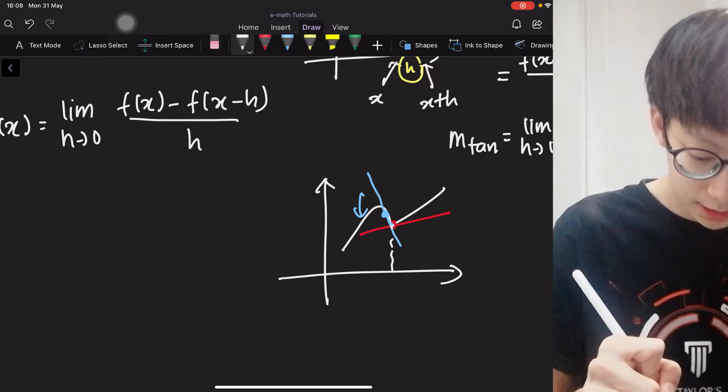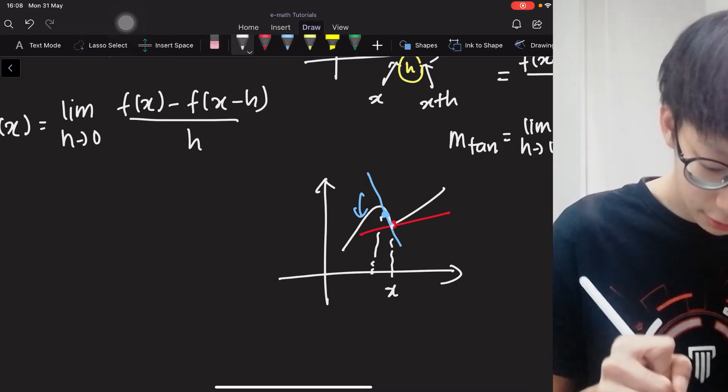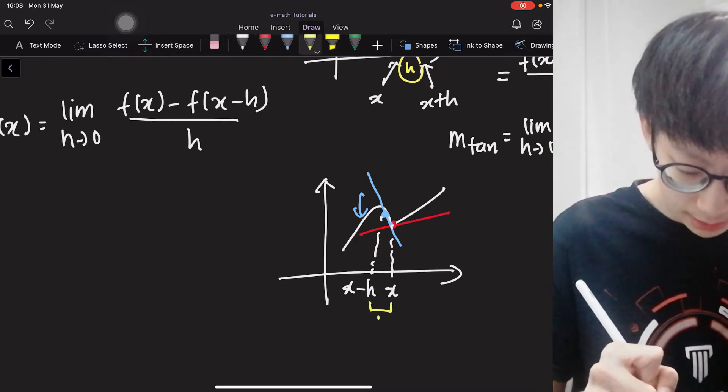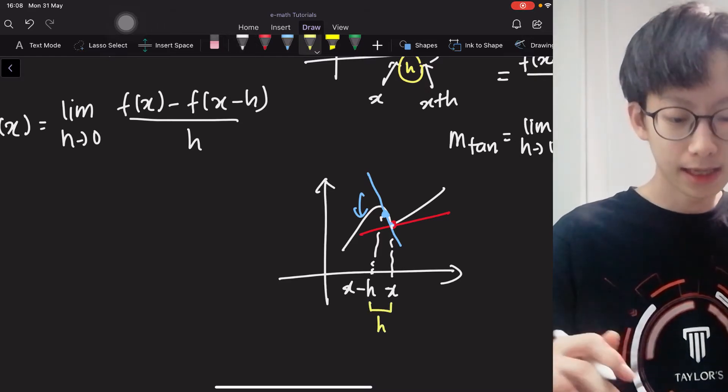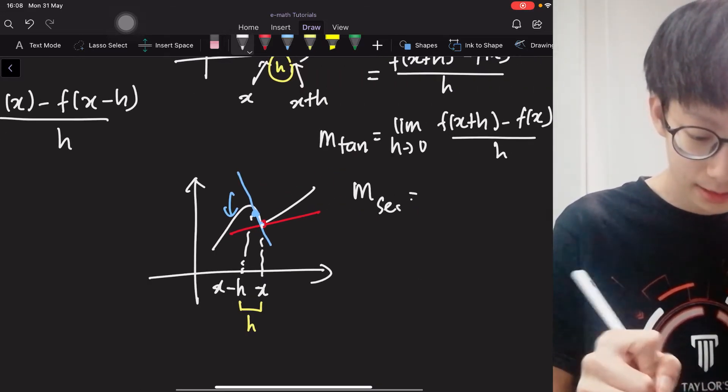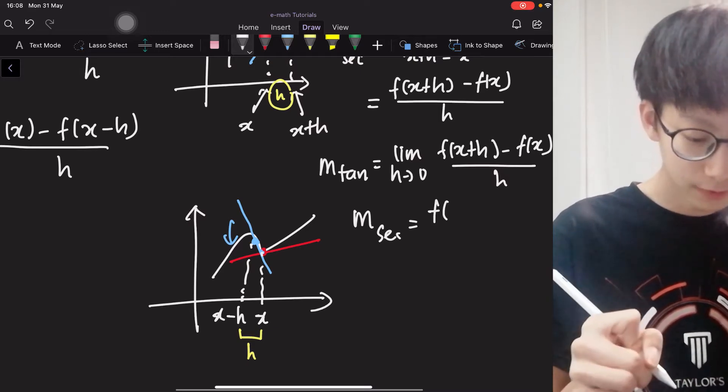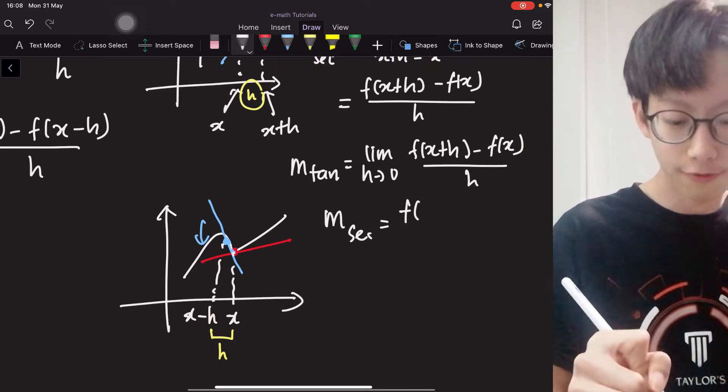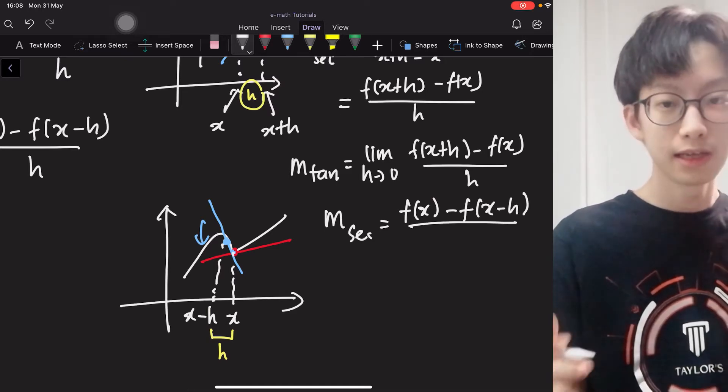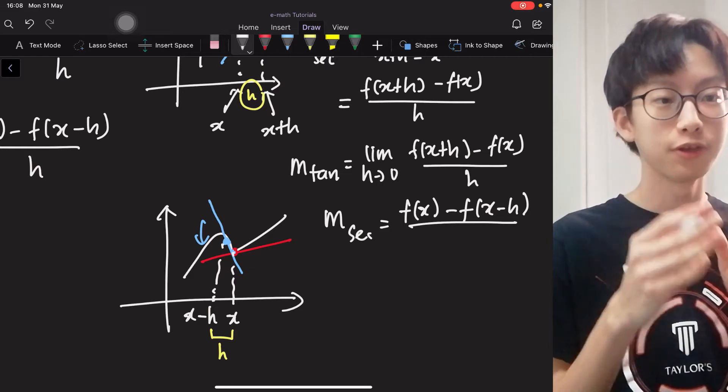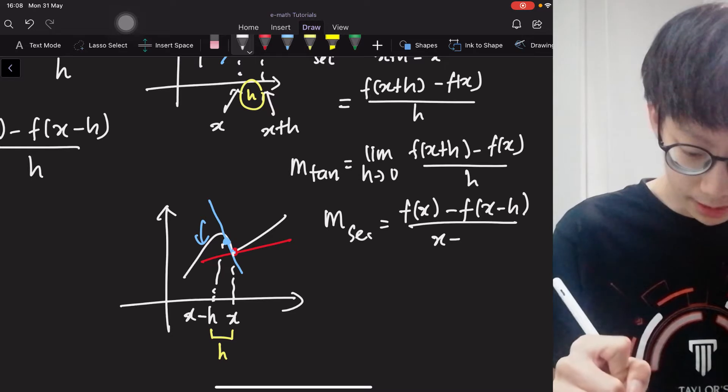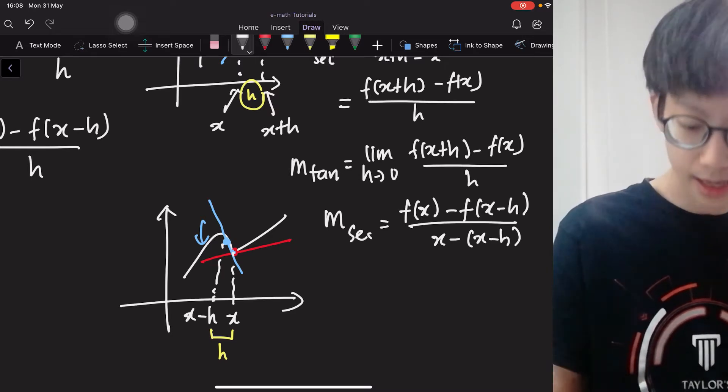So this time, this is your x, and this is your x minus h. So the distance between this and this is h. And again, the slope of the secant line is given by, this time, f(x) minus f(x-h), and divided by, remember you need to correspond your x1, x2, y1, y2 together. So it is x minus (x-h).